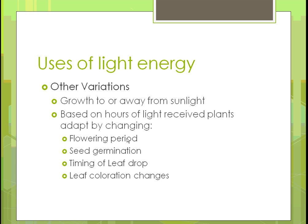Other variations include growth toward or away from sunlight, which can make a real difference in where you place a plant for maximum energy. Adapting the amount of light changes the flowering period, how the seed germinates, and when leaves drop. A plant not receiving enough sun will think it's time to start losing its leaves earlier, and leaf coloration changes will follow around the time of leaf drop.